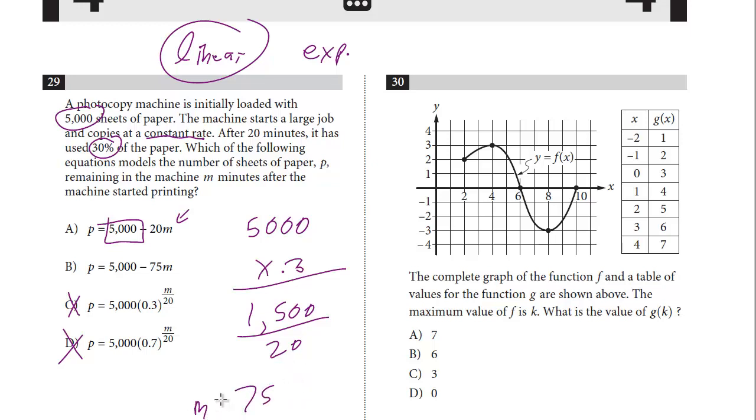This is the number of minutes—or the number of sheets per minute. And so once we figure out this is 75 per minute, to figure out how many sheets of paper P in M minutes, all we're going to do is take 5,000 minus that rate per minute. And the answer here is B. So I don't think it's that difficult of a question, and like I said, recognizing it's linear, and if you look at the choices, you should be able to determine we need to figure out what that rate per minute is, and then we subtract from the starting amount, 5,000.